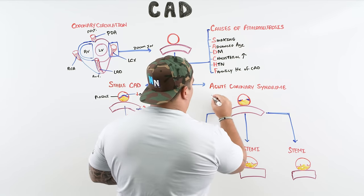After stent placement, dual antiplatelet therapy is required for at least one year — aspirin plus clopidogrel or ticagrelor — to prevent stent thrombosis and reinfarction. After that year, the patient can be maintained on one antiplatelet. Statins are also added to prevent further plaque progression.